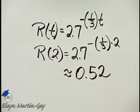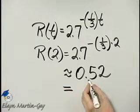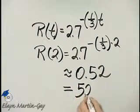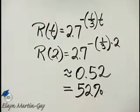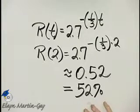Then we're also told to write this as an equivalent percent. To write this as a percent, we move the decimal point two places to the right, and this is 52%. That's the probability that the CD player will work after two years.